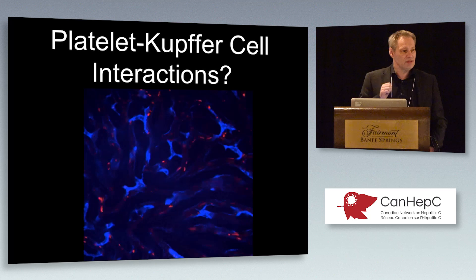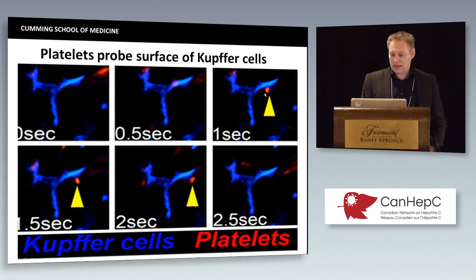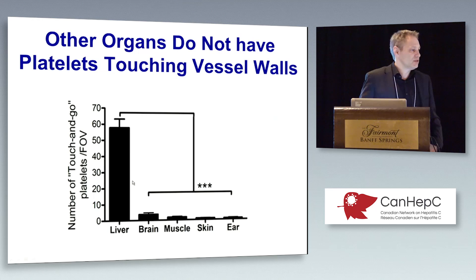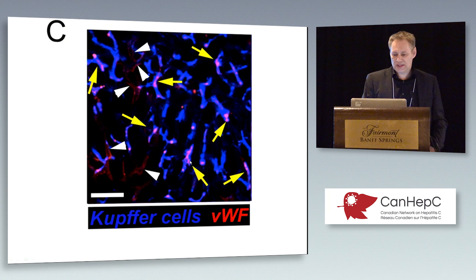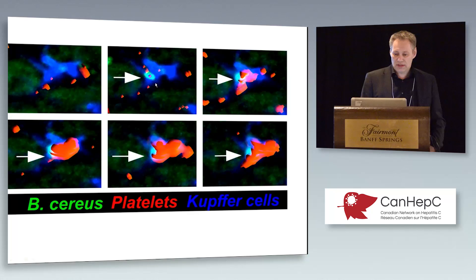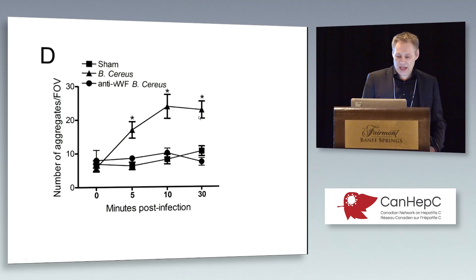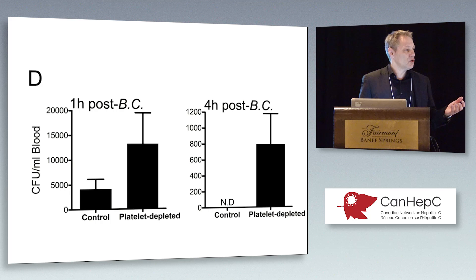Here's a platelet that touches down on a Kupfer cell — one second, two seconds and gone again. Why is it doing that? We looked at all the different organs and it's only in the liver that it's doing this — the liver's the only one with Kupfer cells. Kupfer cells grab von Willebrand factor, thought to be the clearance mechanism, but they keep it on their surface. When a bug — staph, bacillus, any bug — adheres to the Kupfer cell, the platelets immediately encapsulate that Kupfer cell and help to eradicate the infection. If you deplete or inhibit von Willebrand factor, the platelets aren't able to come in and you end up with a much bigger bacterial load, and the animals die much quicker if you deplete platelets.